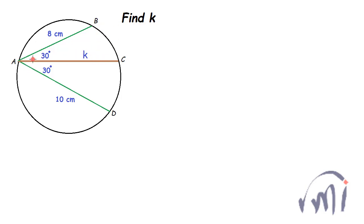K is the length of the chord AC and we are provided with two other chords, chord AB and chord AD. Both of them are making 30 degrees angle with chord AC. This angle and this angle both of them are 30 degrees and we are not given the radius of the circle.